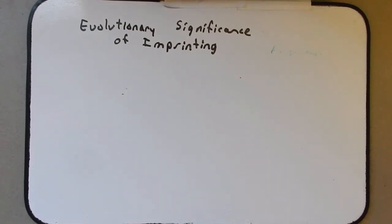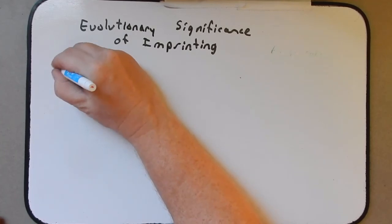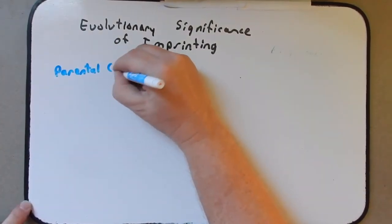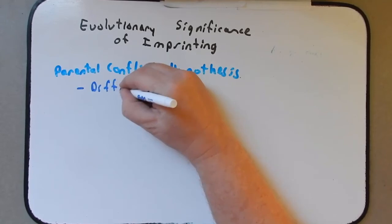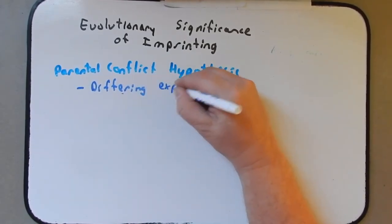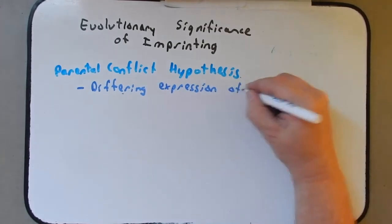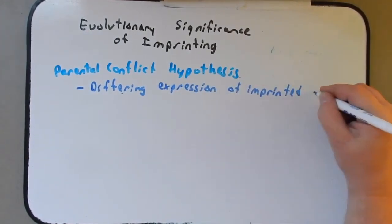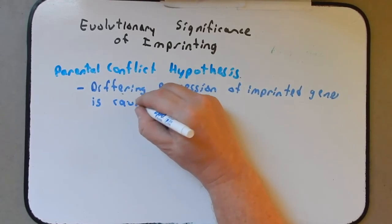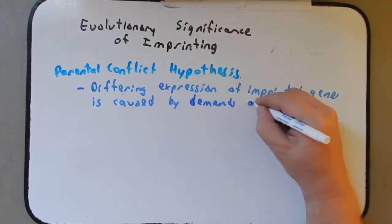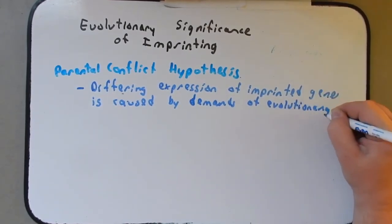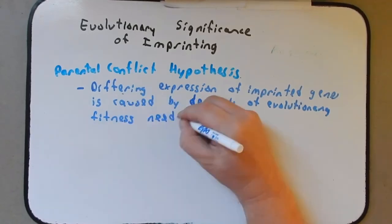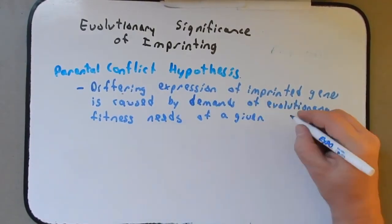So, there's got to be an evolutionary advantage. And, one of the favorite hypotheses is this one called Parental Conflict Hypothesis. So, what is the Parental Conflict Hypothesis? In general, what this means is the differing expression of imprinted genes is caused by demands of evolutionary fitness needs of a given sex.